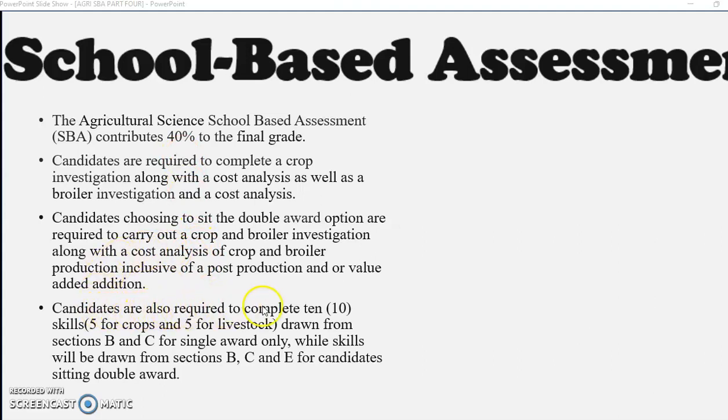Candidates are also required to complete 10 skills, five for crops and five for livestock. This is drawn from sections B and C for single award only, while skills will be drawn from sections B, C and E for candidates sitting double award.